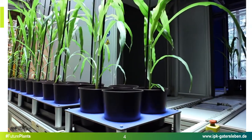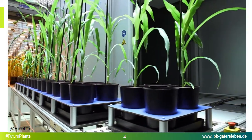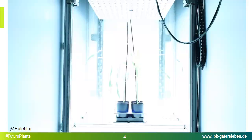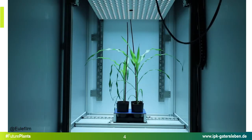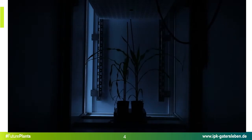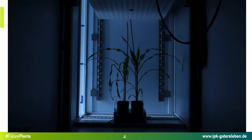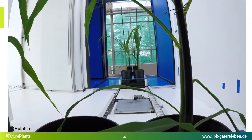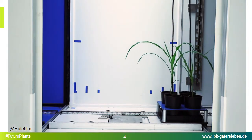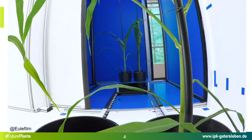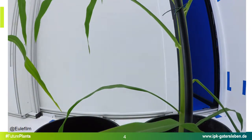At IPK, we have set up several phenotyping systems — for example, a conveyor-based plant-to-sensor phenotyping system for large plants. Here, plants are moved to imaging chambers on special carriers and will be imaged daily in different wavelength ranges. Using automated image analysis pipelines, we are able to extract hundreds of architectural, color and even physiological traits such as photosynthesis from these images.